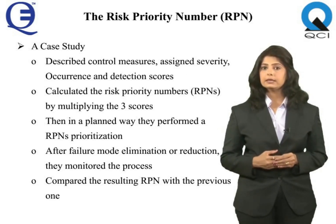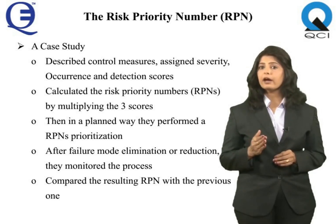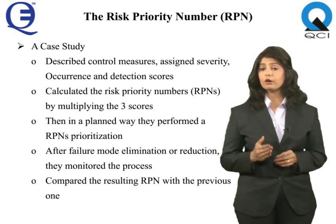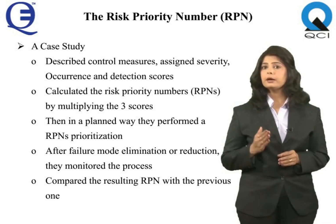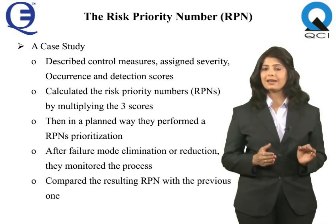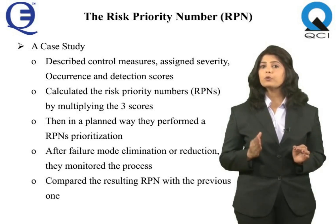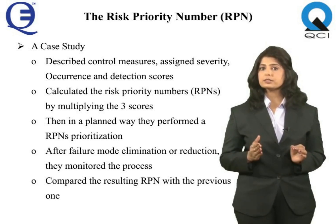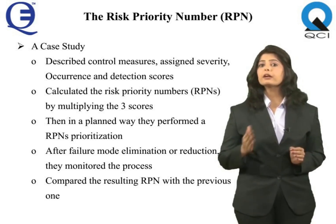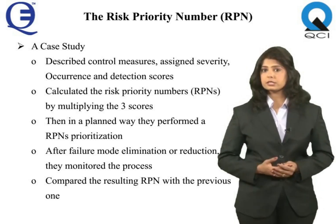Then, in a planned way, they performed an RPN prioritization on a priority matrix, taking into account the three scores, analyzed failure modes and their causes, made recommendations, and planned new control measures.